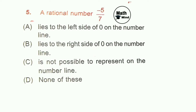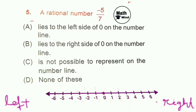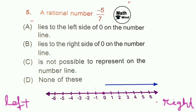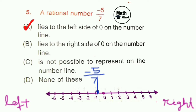Question 5: For the rational number −5/7, option A states it lies to the left side of 0 on the number line — this is correct, because all negative numbers lie to the left of 0 and positive numbers lie to the right. Option B (lies to the right) is false. Option C (cannot be represented on the number line) is also false, since all rational numbers lie on the number line. Option A is correct.